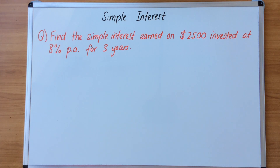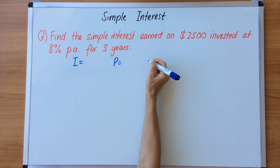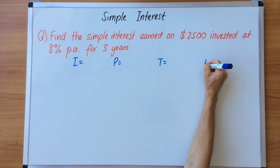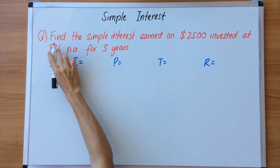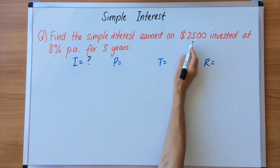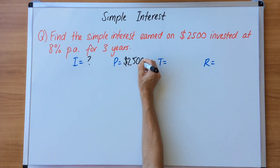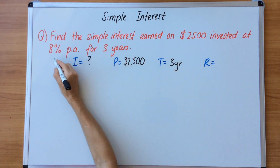Before we proceed, we must write down the specific information important for this calculation: I for interest, P for principal, T for time, and R for rate. The interest is what we're looking for, so we don't have a value for that yet. The principal is $2,500, the time is three years, and the rate is eight percent.